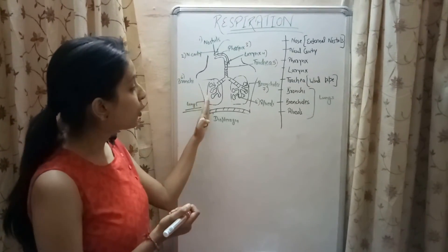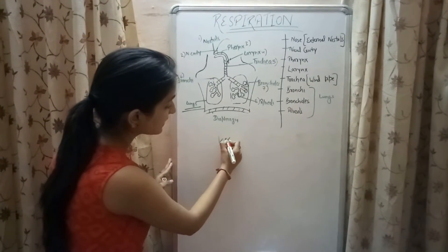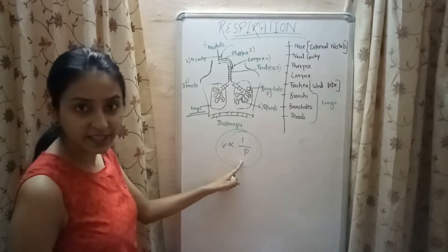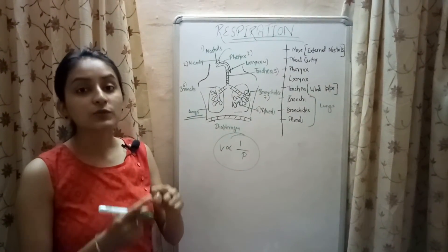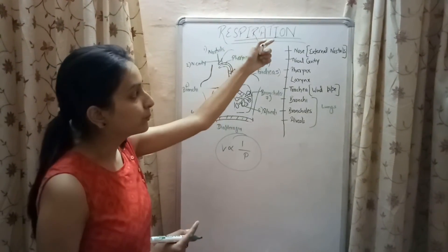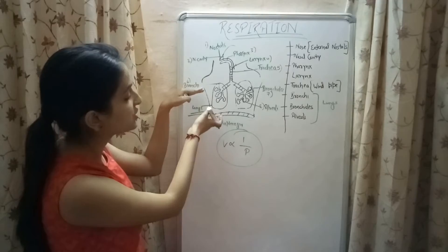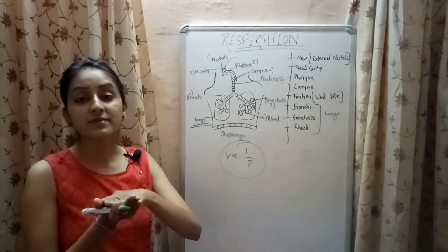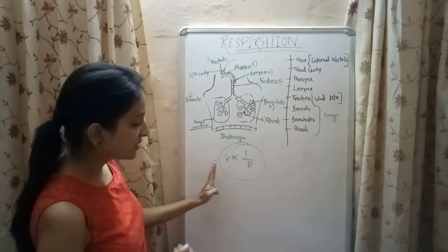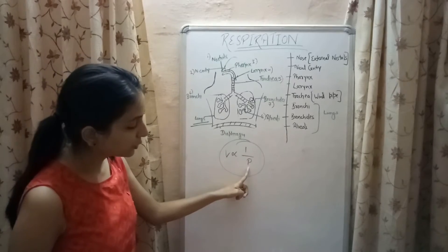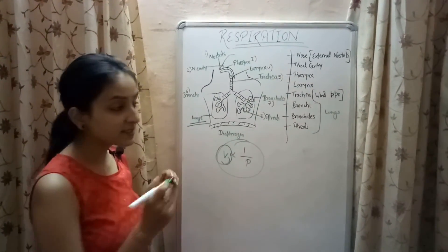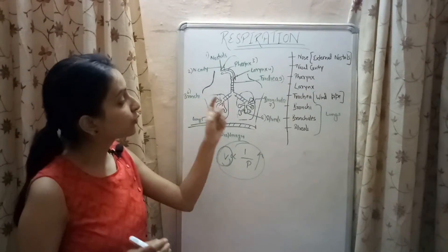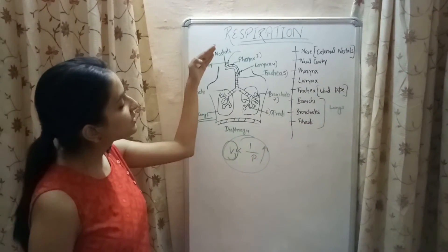The respiratory muscle in humans is known as the diaphragm. When you breathe in, the diaphragm contracts and becomes flat, increasing the volume inside the lungs. Since volume is inversely proportional to pressure, the pressure inside the lungs decreases, and since air moves from high pressure to low pressure, air from the atmosphere enters the lungs. When you exhale, the diaphragm relaxes and moves out, decreasing the volume inside the lungs, causing pressure to increase, and air moves from the lungs to the atmosphere.